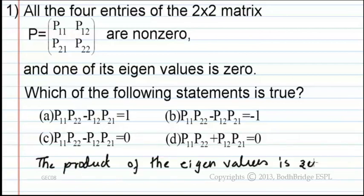So the product of the eigenvalues is 0. That is lambda 1 into lambda 2 is 0.